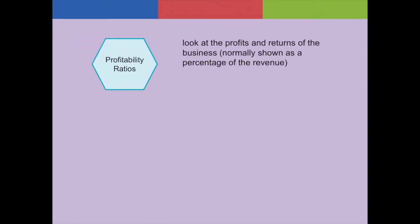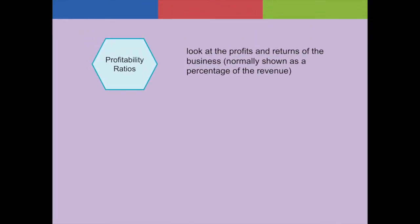Following on, the accounting ratios can be categorized into three main groups and they are profitability, liquidity, and efficiency. Profitability ratios look at the profits and returns of the business. This is normally shown as a percentage of the revenue of the business.